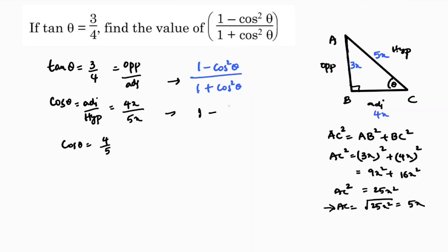Now if we substitute the value: 1 minus (4/5)² divided by 1 plus (4/5)². So 1 minus 16/25 divided by 1 plus 16/25.